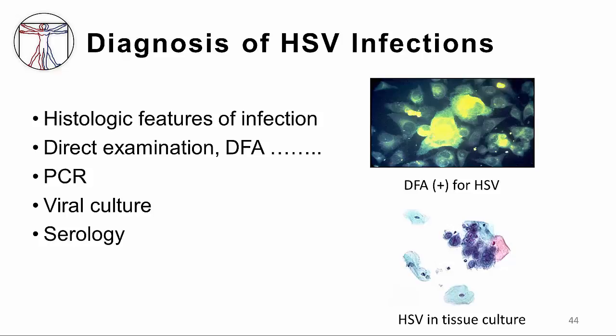A more specific and definitive way is to do a DFA — a direct fluorescent antibody test for herpes, as demonstrated in this picture. For this, antibodies against herpes simplex virus are labeled with fluorescein. A specimen from a suspected infected patient is obtained, the specimen such as vesicular fluid is dried, and then the antibody is overlaid on it. It is washed, and if the antibody finds the herpes antigen, it sticks and lights up under fluorescent microscopy. This is quite specific and quite sensitive.